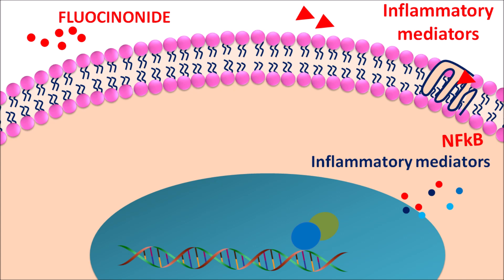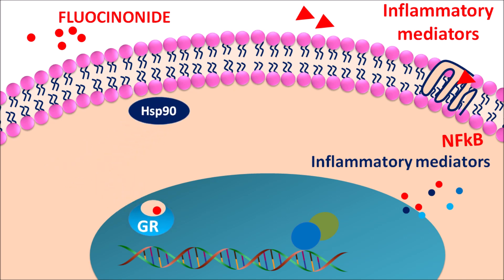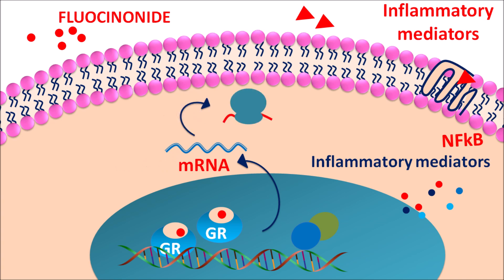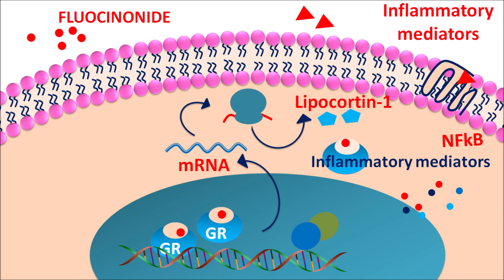Fluocinonide is an anti-inflammatory agent and a corticosteroid. It can bind to glucocorticoid receptors located in the cytoplasm. Fluocinonide crosses the cell membrane and binds to these glucocorticoid receptors. When bound, the heat shock protein 90 is detached and the receptors are internalized into the nucleus. Within the nucleus, they are dimerized and interact with DNA to release mRNA by gene transcription. This mRNA undergoes protein synthesis at ribosomes to produce anti-inflammatory mediators like lipocortin-1 and annexin-A1, which check the progression of inflammation. The activated glucocorticoid receptors can also interact with DNA to inhibit activation of the NF-κB pathway, thereby reducing release of inflammatory mediators.